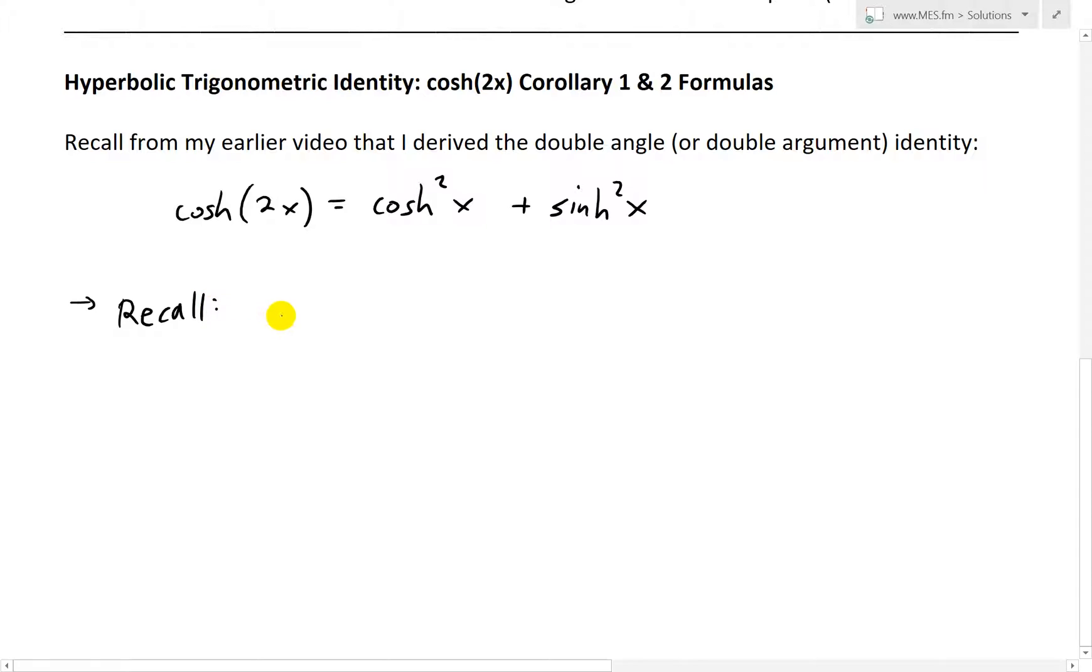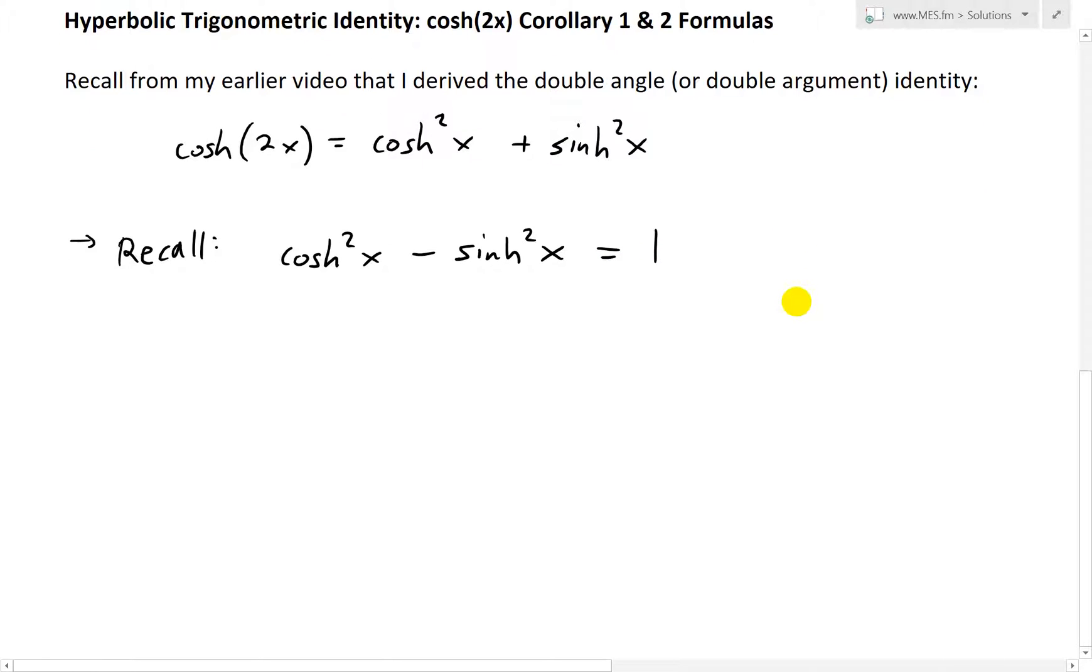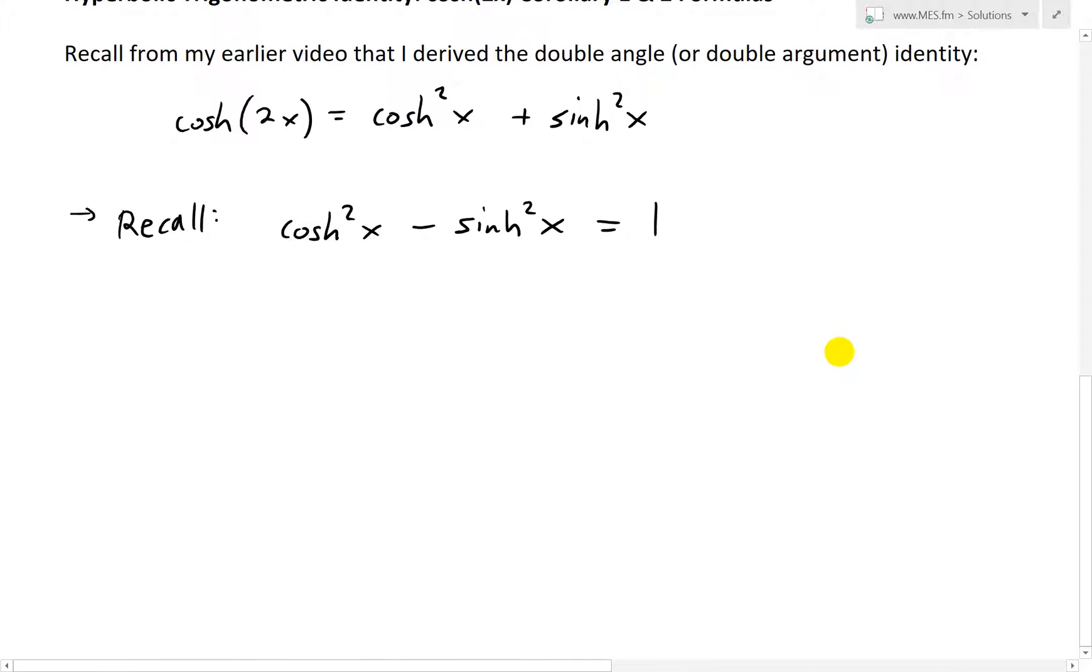And so recall my earlier video that I showed that cosh²x minus sinh²x is the famous hyperbolic identity. So this is cosh²x minus sinh²x equals 1. So what we could do now is we'll reword or rewrite this equation in terms of cosh²x and then throw that inside here and also reword this one in terms of sinh²x to get the second corollary.